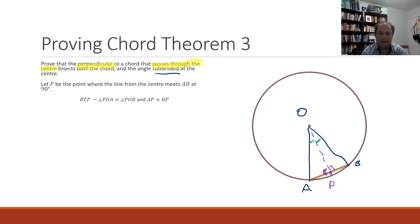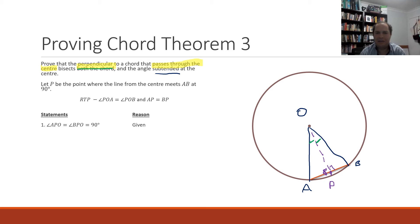Setting up our table with statements and reasons: the first thing we can say is that angles OPA and OPB are both 90 degrees — that was given to us in the question because we're told our line is a perpendicular. So APO and BPO are both 90 degrees — given. The second thing we can say is that AO and BO are both the same length because they are both radii from the same circle, so those line lengths must be the same.